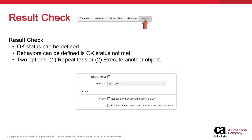Earlier, we stated that we could set a result check for the entire schedule based on a status — say AnyOK or EndedOK — and execute certain actions in the event of another status. This property can be bypassed with this task property. The two actions are: repeat the task if it does not end in the defined OK status, or execute another object like a notification.